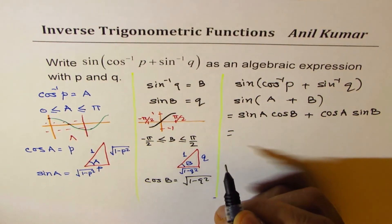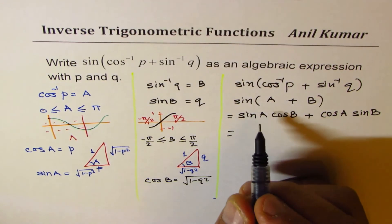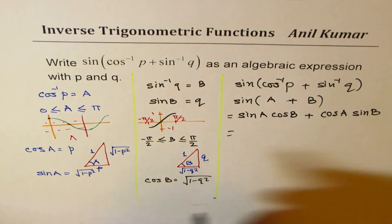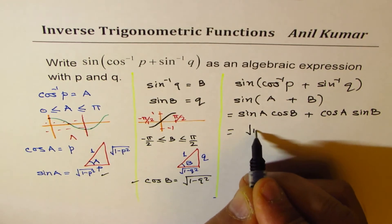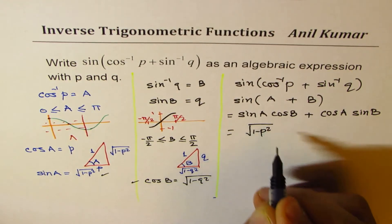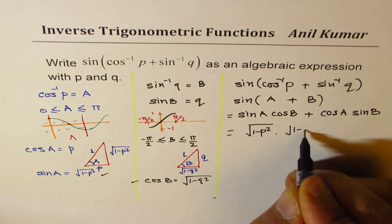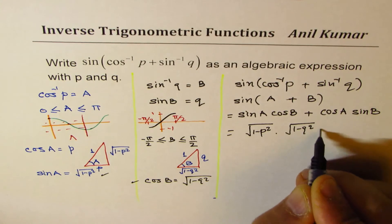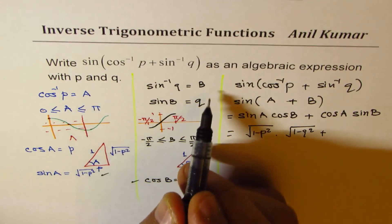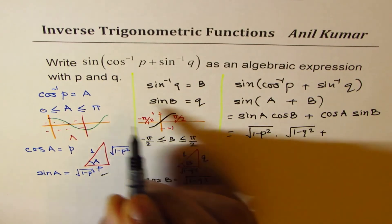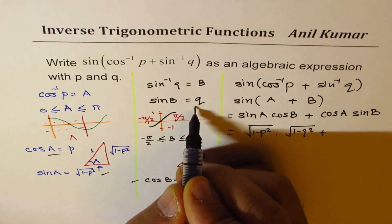Now we can substitute the values which we just found here. Sin A cos B, that means these two values, which are √(1 - p²) and cos B is √(1 - q²). As far as cos A sin B values are given, they are p and q.